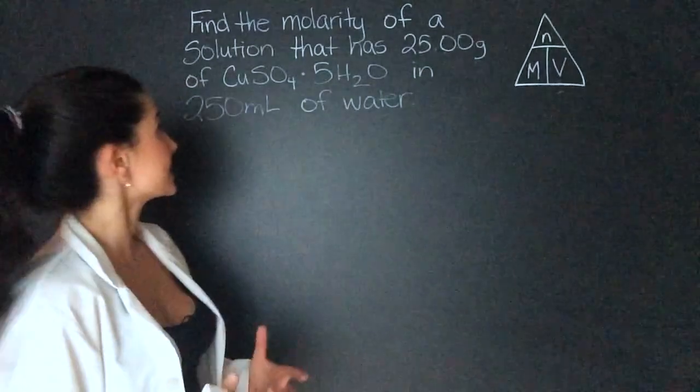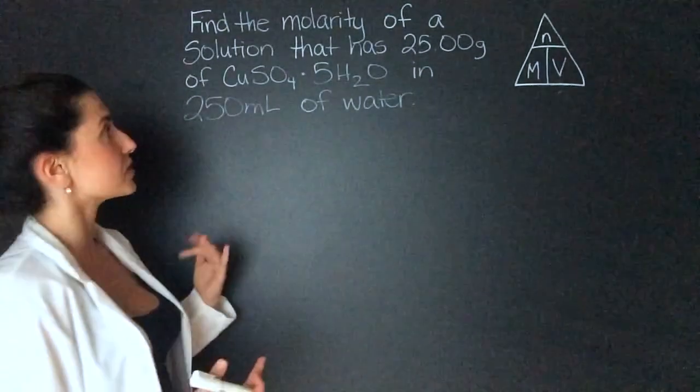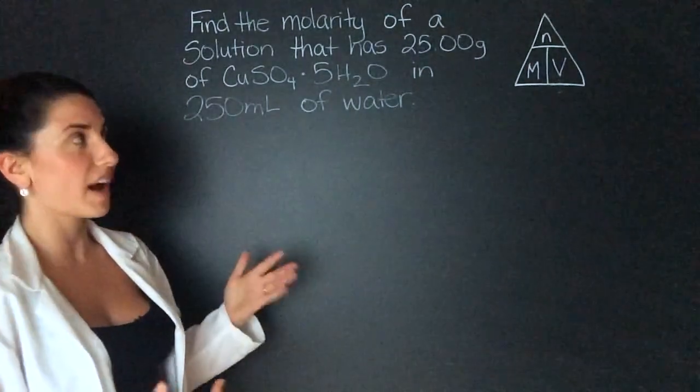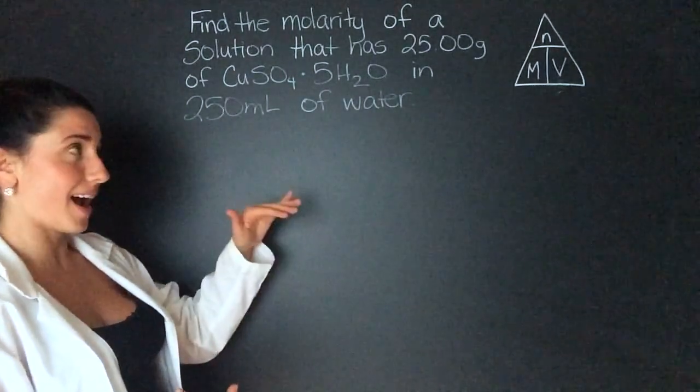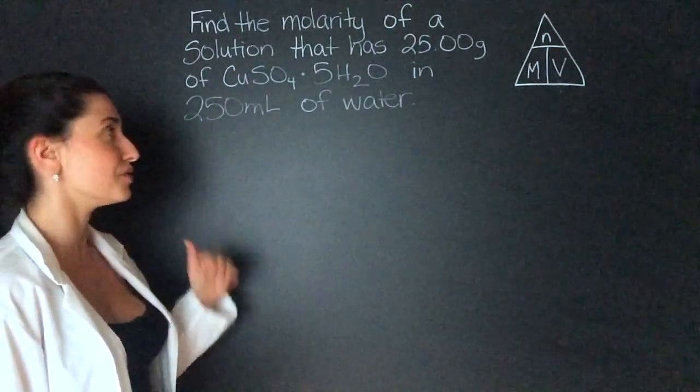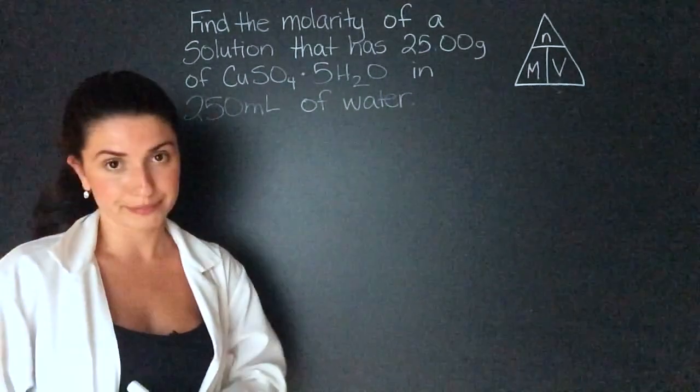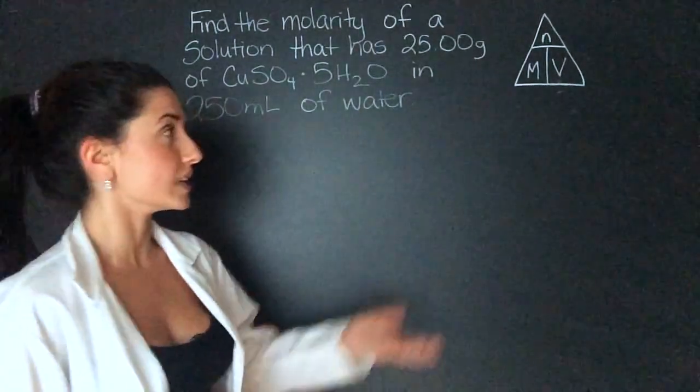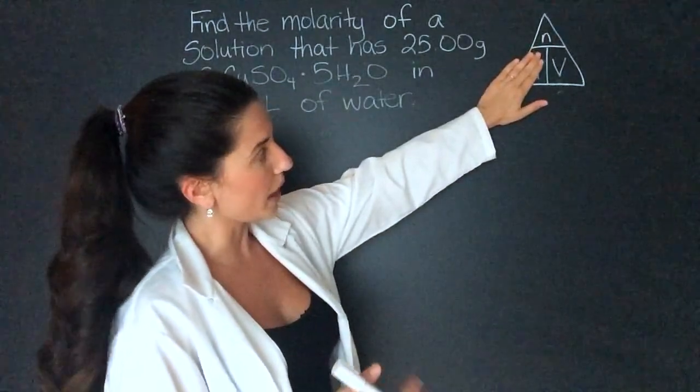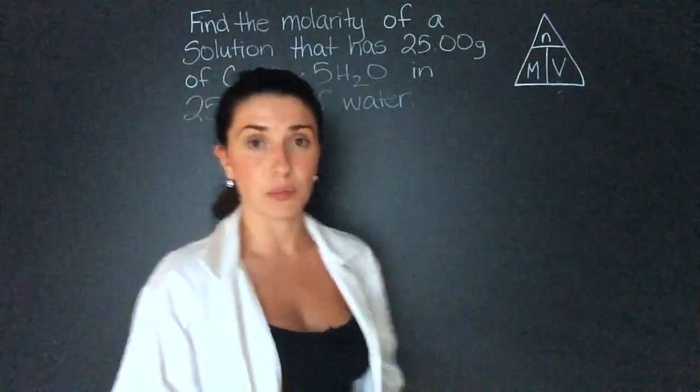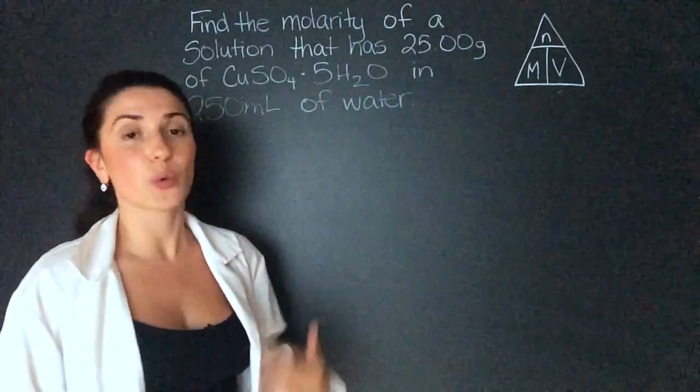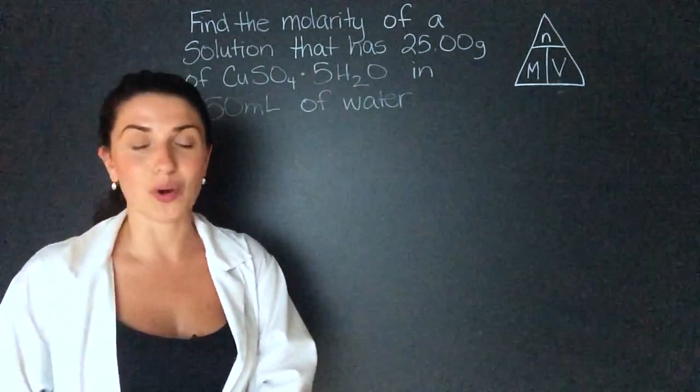My first example says, find the molarity of a solution that has 25.00 grams of copper sulfate pentahydrate in 250 milliliters of water. They're asking us for the molarity. So what we're going to do is cover this up and we know it's moles divided by volume. So we have to find the moles. They've given us the mass.